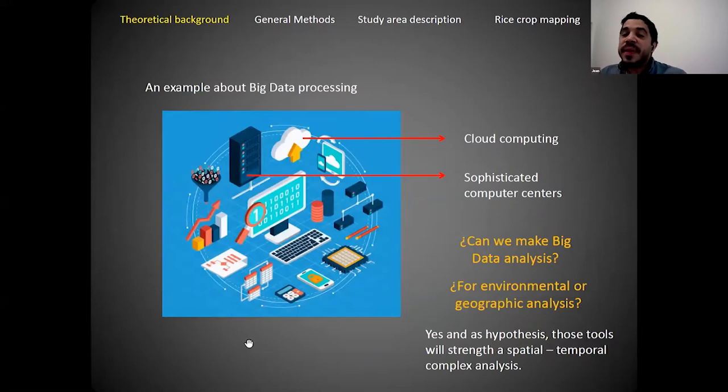Big data processing is quite complex and has many elements. We're going to talk about two very important ones: cloud computing and sophisticated computer science. This theoretical background leads me to a question.